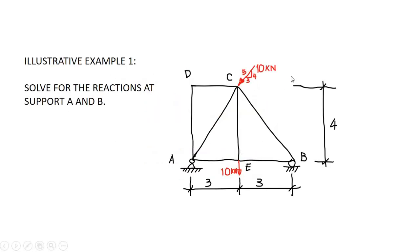We have here a truss with supports at A and B. We are required to solve for the reactions at support A and B. We have point loads at C which is inclined with these side slopes of 3 horizontal to 4 vertical, and we also have a point load at joint E which is 10 kilonewtons downward.